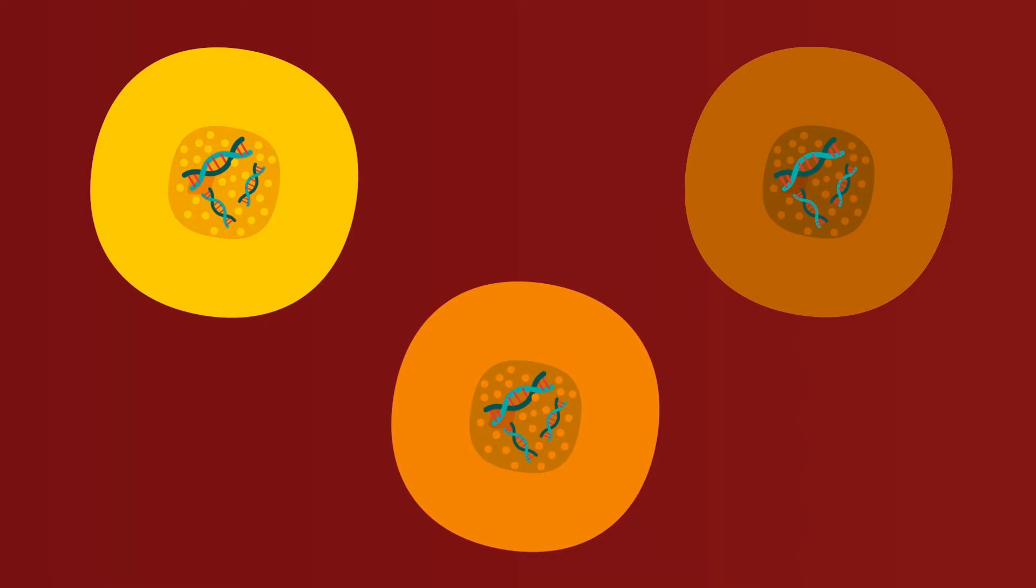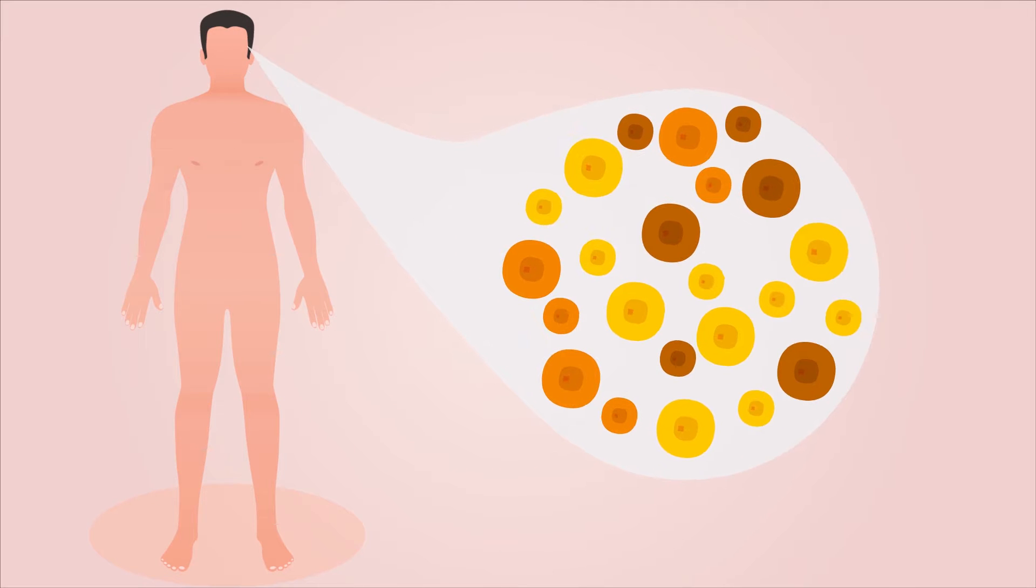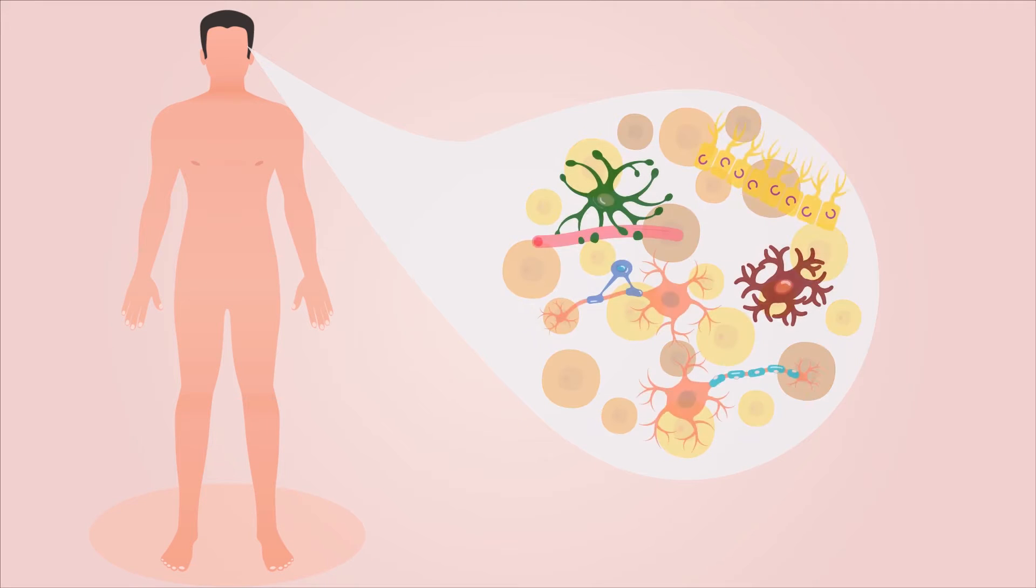This principle states that while an organism's cells all share the same genes, each cell type can develop unique patterns of gene expression, resulting in diverse phenotypes. Epigenetics defines the fate of most cells in the human body, including the glia.